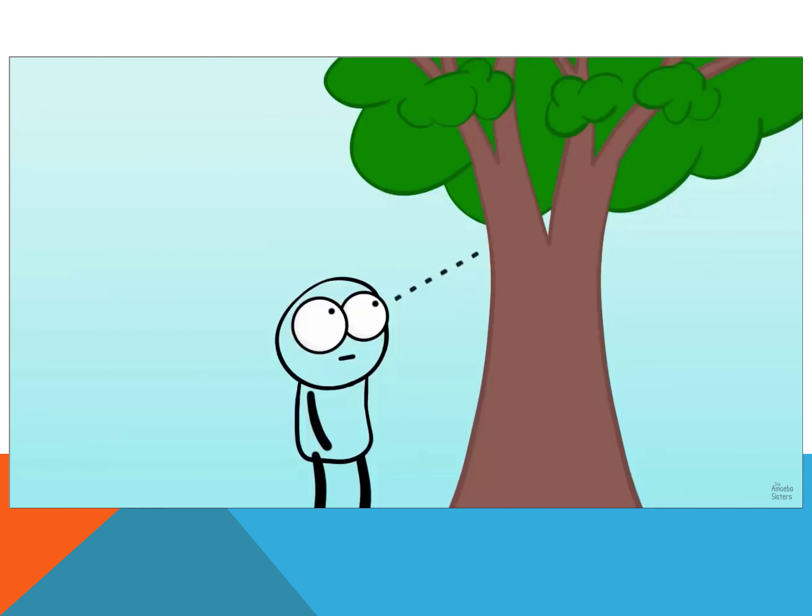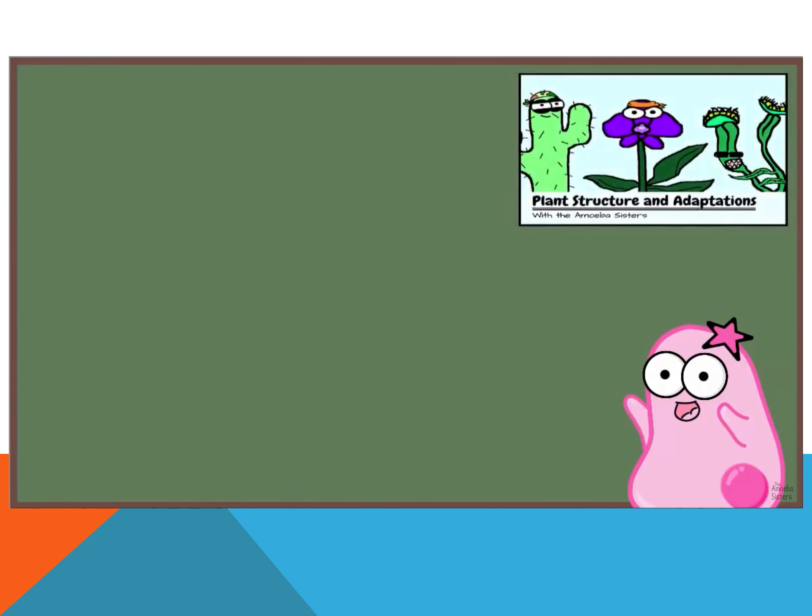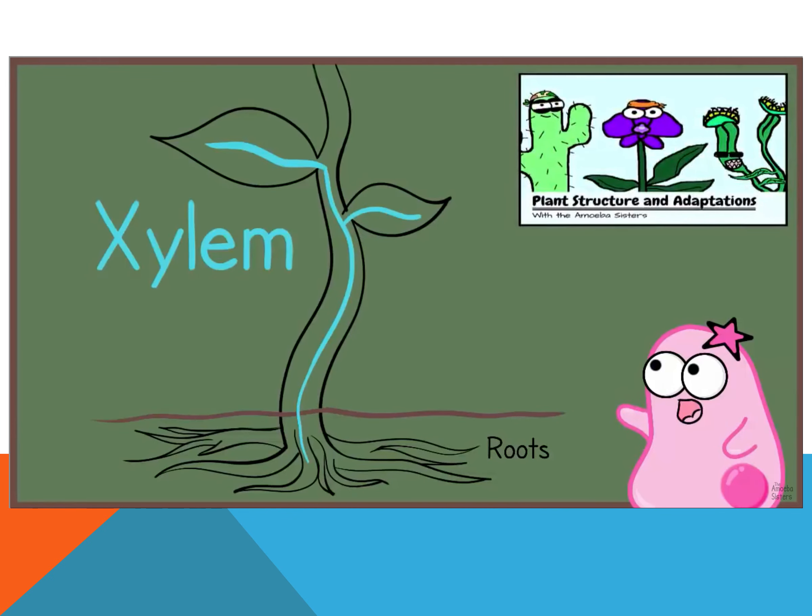Have you ever looked at a really tall tree and wondered, how does the water get all the way up there? I mean, it's got to go against gravity. Gravity? Well, in our plant video, we talk about the xylem. It's vessels within certain types of plants, like trees, and these vessels transport water.